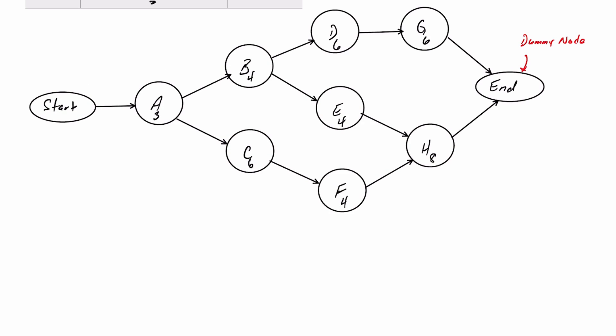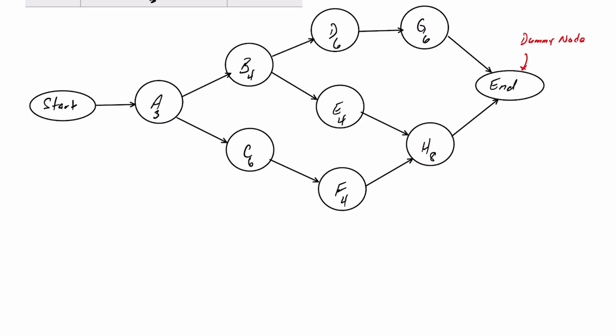Now what we can do is identify all the paths that we have. A path is just following the arrows all the way through the diagram. So for example, one of the paths that we have is A, B, D, G, and end. So I'm going to list that as one of the paths.